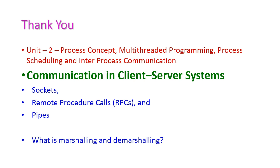We have seen the communication in client-server systems, and there are three types: socket communication, RPC (remote procedure call), and pipes. By using these three methods, client-server systems communicate with each other. Now for the question: what is marshaling and de-marshaling in RPC? Students, please write your answer in the comment box. In the next class, we will see another important topic from the second unit. Thank you.